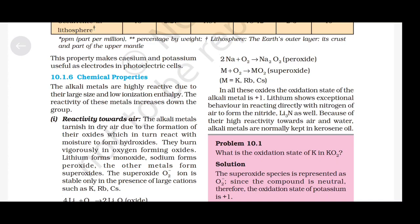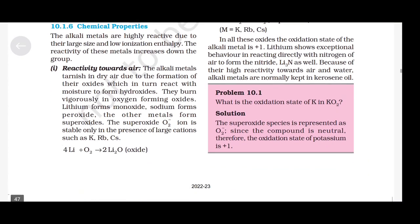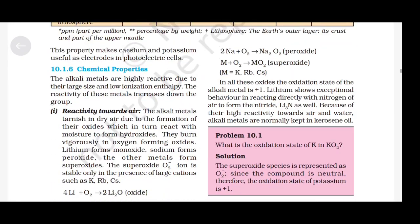Lithium forms monoxide (Li₂O), sodium forms peroxide (Na₂O₂), and the other metals — potassium, rubidium, caesium — form superoxide (MO₂). The superoxide O₂⁻ ion is stable only in the presence of large cations. Reactions: 4Li + O₂ → 2Li₂O; 2Na + O₂ → Na₂O₂; M + O₂ → MO₂ (superoxide, where M = K, Rb, Cs). In all these oxides, the oxidation state of the alkali metal is +1.